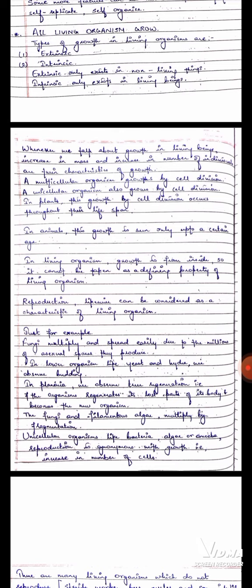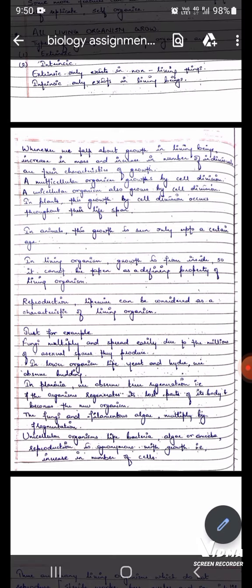Just for example, fungi multiply and spread easily due to the millions of asexual spores they produce. In lower organisms like yeast and hydra, we observe budding. In planaria, we observe true regeneration. That is, the organism regenerates its lost part of its body and becomes a new organism. Like for example, lizards. They can cut off their tail and regenerate again.